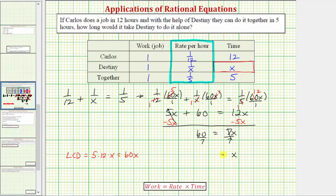So x equals sixty-sevenths, which means it takes Destiny sixty-sevenths hours working alone to complete the job.